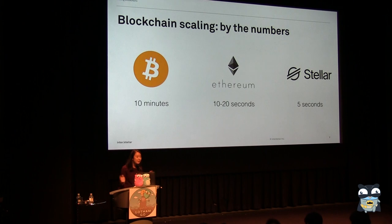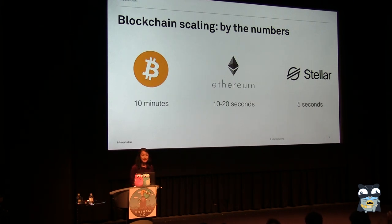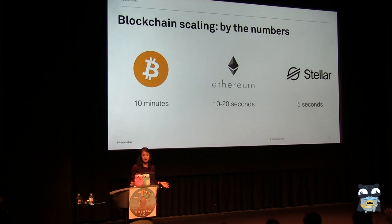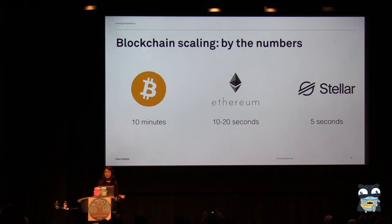Some other networks do this a little bit better. In Ethereum, it's 10 to 20 seconds. On the Stellar network, which is what Interstellar runs on, it's about five seconds. But still, in terms of building applications, these are way too long — things that most developers and applications don't really want to work with.